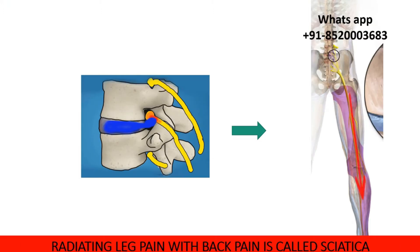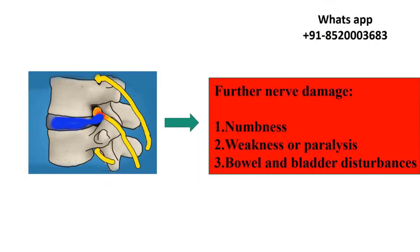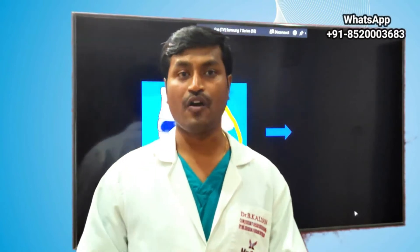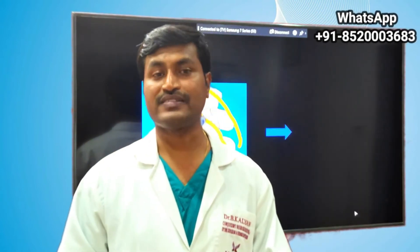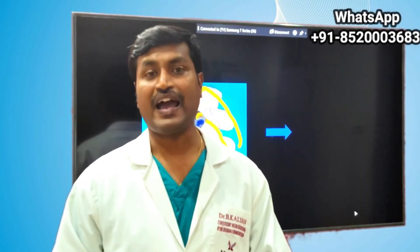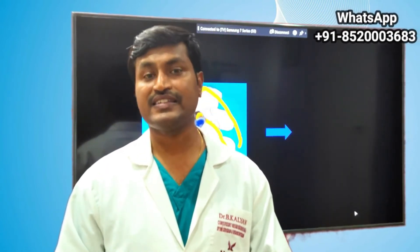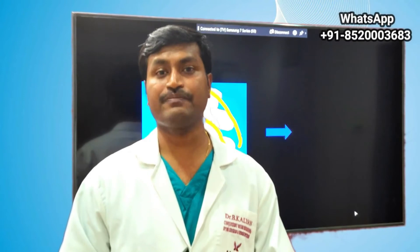This radiating pain along with back pain is called sciatica. Further damage causes numbness, weakness or paralysis, and bowel and bladder disturbances. I hope you have understood how a slipped disc causes back pain, leg pain, and in later stages numbness and paralysis.